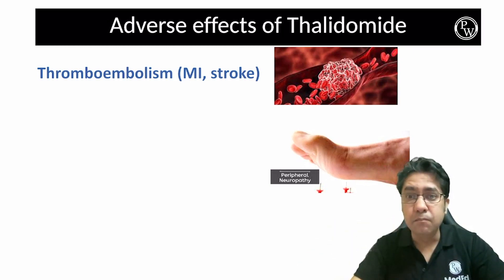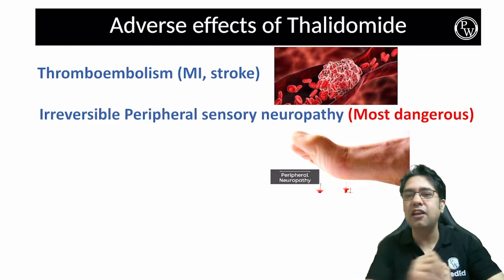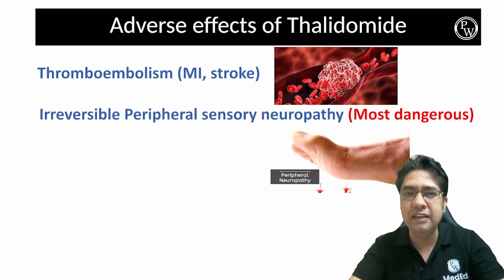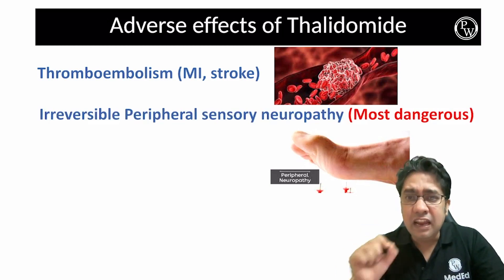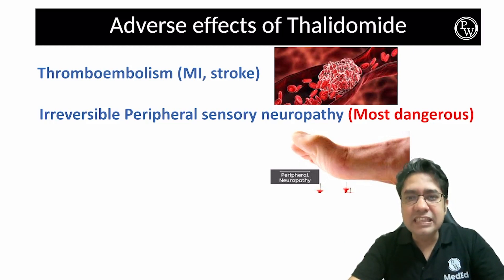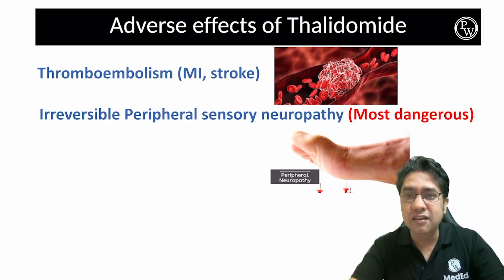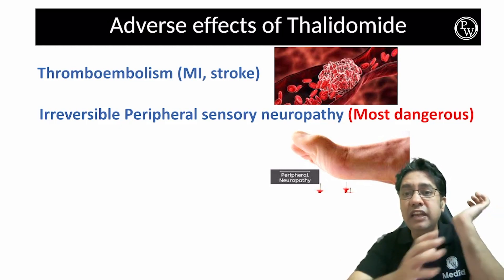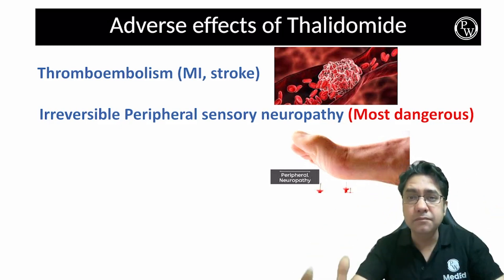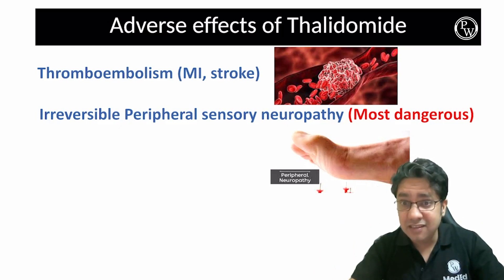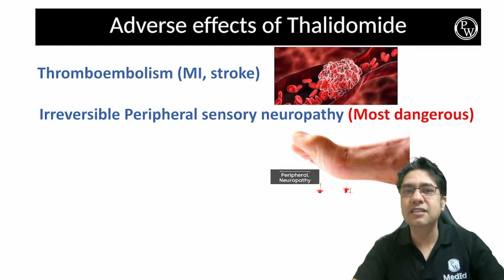The second most dangerous toxicity of Thalidomide is that it causes irreversible peripheral sensory neuropathy. The sensory nerves are permanently damaged, which will lead to malformation of limbs. This is considered to be the most dangerous adverse effect of Thalidomide.